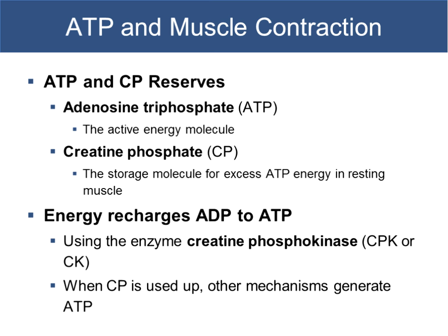We have two different molecules we can use as ATP reserves. ATP is the energy currency of the cell. We also have creatine phosphate — the creatine molecule can hold onto excess phosphate groups. When we need to put another phosphate group onto ADP to recharge it to ATP, creatine phosphate is available. The energy recharges ADP back to ATP, going from two phosphates to three, making it ATP.